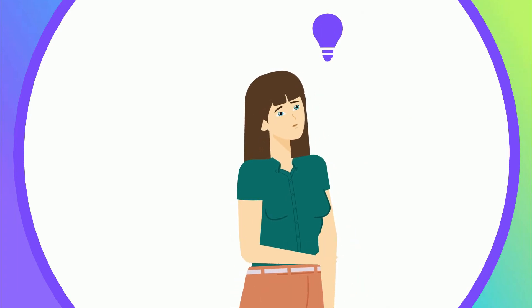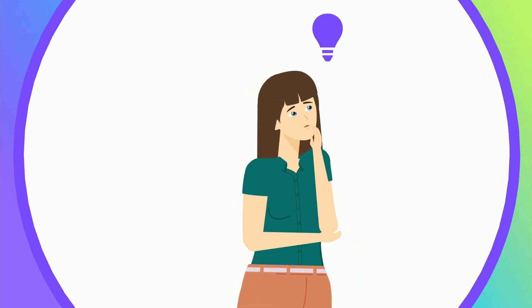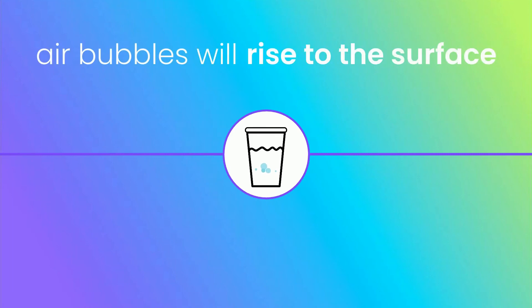How can you check to see if the cloudiness is air in the water? Over time, the air bubbles will rise to the surface, clearing from the bottom to the top of the glass or container.